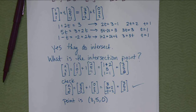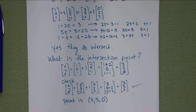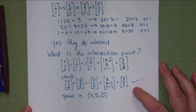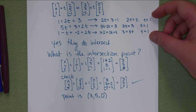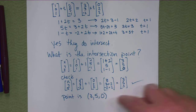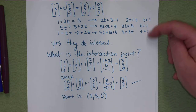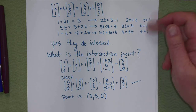The answer is a point, not a vector, so be careful with the brackets. I plugged it into the second line as a check — you should end up with the same point, or you made an error. If your T value was correct then your point is likely correct too, though sometimes errors creep in during the plug-in step.